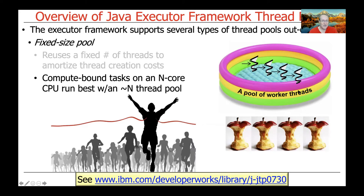That raises an important question: how many threads should be in the fixed-size thread pool? If you have only compute-bound tasks — meaning CPU-intensive work that doesn't do any I/O and only briefly blocks for locks — and you have an N-core CPU, then you're best served by having a fixed-size thread pool with N threads in it.